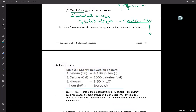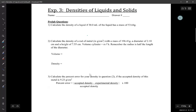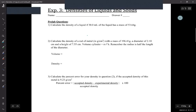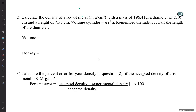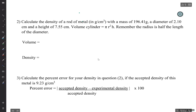We're going to do the pre-lab. Calculate the density of a rod of metal with a mass of 196.41 grams, a diameter of 2.10 centimeters, and a height of 7.5 centimeters. The volume of a cylinder equals pi r squared times h. Remember, the radius is half the diameter.